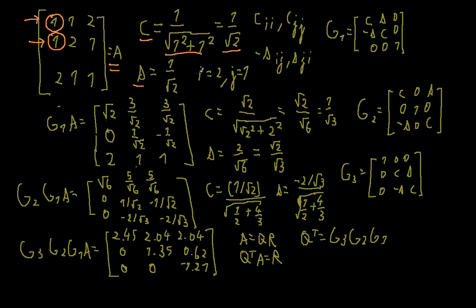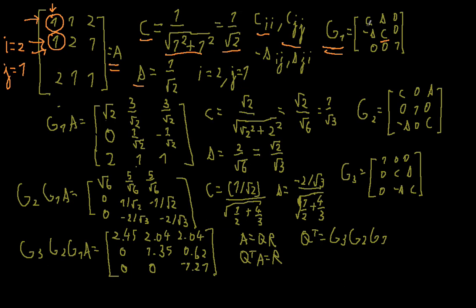Now we can set up our Givens rotation matrix. Remember how we place the cosine and the sine. The first cosine is in the i-th row and i-th column, where i is the row of the element we want to eliminate. Here i is 2, because the element we want to eliminate is in the second row. So the first cosine is in place (2,2). The second cosine is in place (j,j), where j is the column of the element we want to eliminate. The column is 1, so j is 1, meaning the second cosine is in place (1,1).